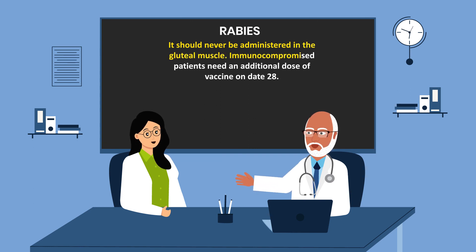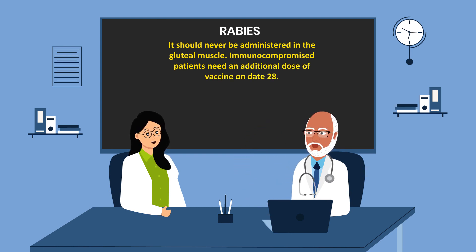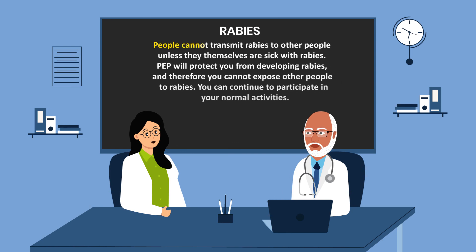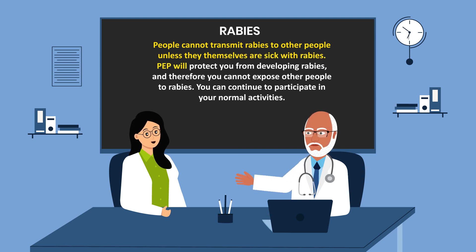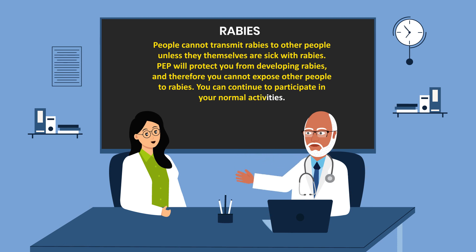Immunocompromised patients need an additional dose of vaccine on day 28. People cannot transmit rabies to other people unless they themselves are sick with rabies. Post-exposure prophylaxis will protect you from developing rabies, and therefore you cannot expose other people to rabies. You can continue to participate in your normal activities.